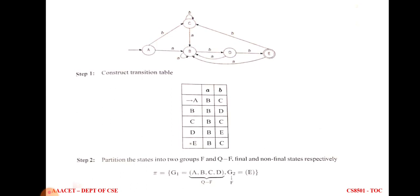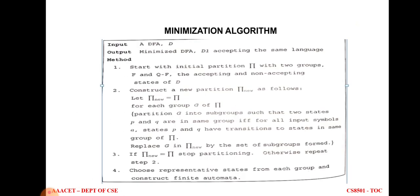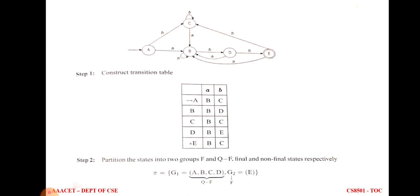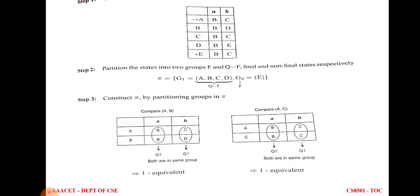The second step is the first step of the minimization algorithm: start with the initial partition π with two groups. G1 is the non-final states: G1 = {A, B, C, D}, which is Q minus F. G2 is the final state: G2 = {E}, which is F. So π = { {A,B,C,D}, {E} }.